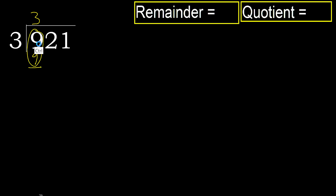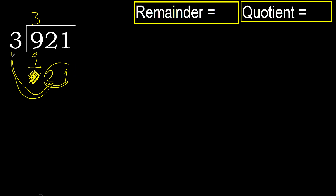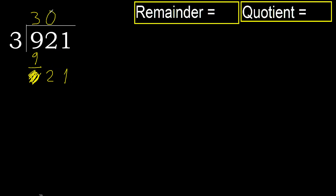Subtract: 9 minus 9 is 0. Next, bring down 2. 2 is less, therefore go to the next digit. Bring down to get 21. 21 is not less — 2 numbers, therefore complete.